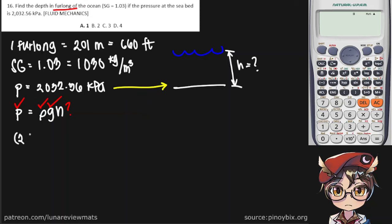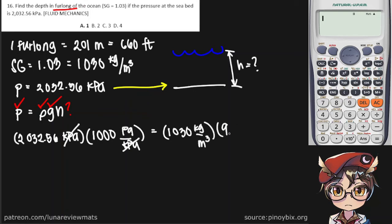This would be our pressure. Do note that this is in kilopascals, so we need to convert that by multiplying by a thousand, and that turns it into pascals. And then the density of our seawater times the gravitational acceleration, and of course the unknown is our h.